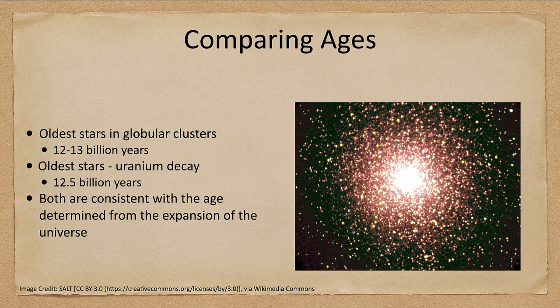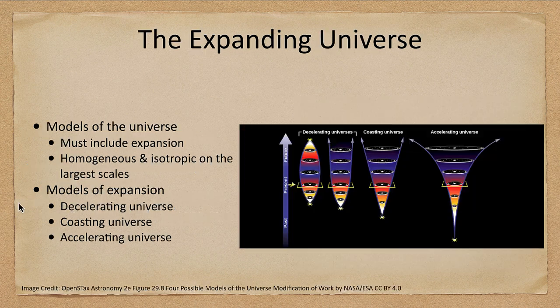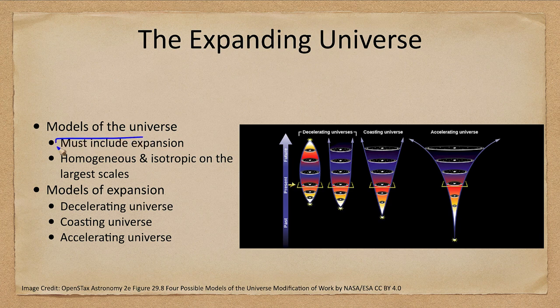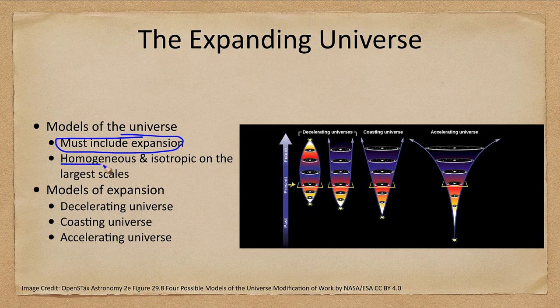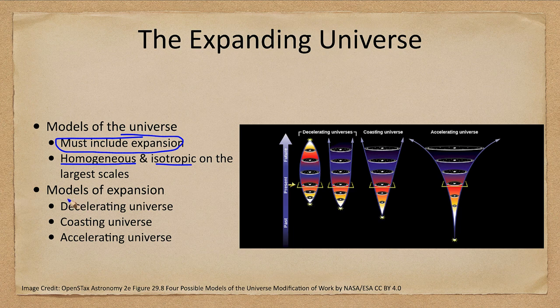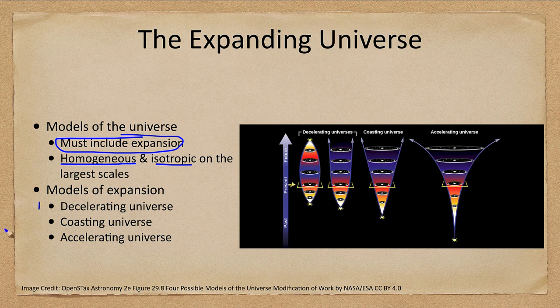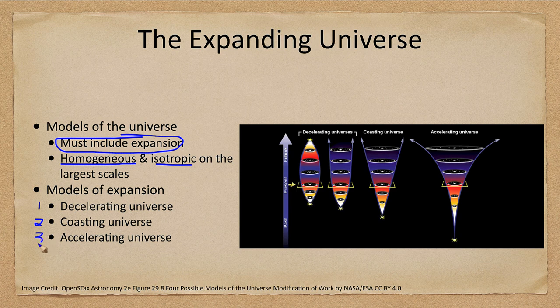So what does this do for the expanding universe? We can have various different models, but they must include expansion. We know the universe is expanding. We also know that the universe is homogeneous and isotropic on those very largest scales. So based on this, there can be three possibilities for the universe. One, the universe can be decelerating, that means it's slowing down. It can be coasting, just going at a constant speed, that would be the same Hubble constant all the time. Or it can be accelerating.